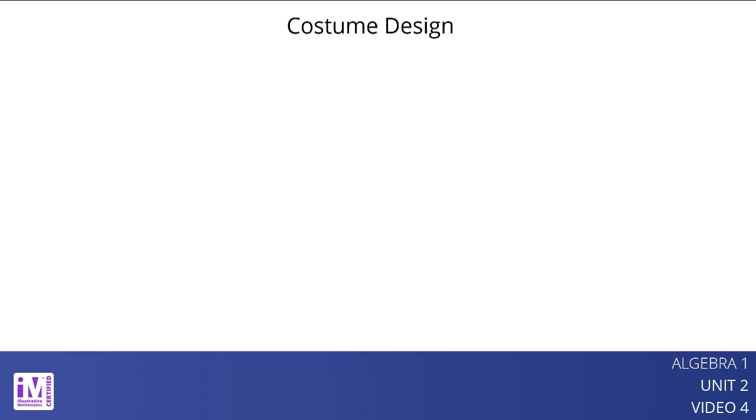A costume designer needs some silver and gold thread for the costumes for a school play. She needs a total of 240 yards. At a store that sells thread by the yard, silver thread costs 4 cents a yard, and gold thread costs 7 cents a yard. The designer has $15 to spend on the thread. How many of each color should she get if she is buying exactly what is needed and spending all of her budget?